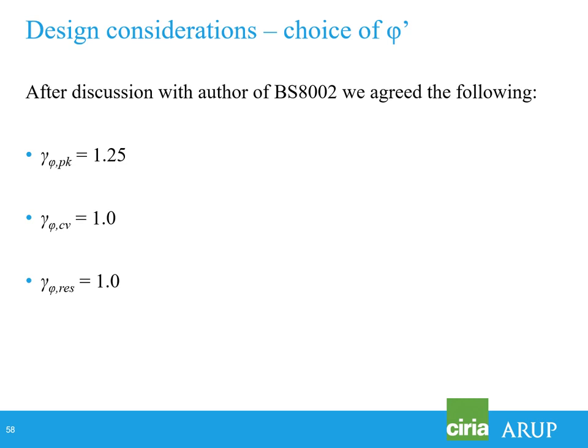The UK National Annex states the 1.25 should be applied to tan-phi or tan-phi CV, although it may be more appropriate to determine the design value of phi CV directly. This was Andrew Bond trying to allow us to set a partial factor of phi CV of unity, but you wouldn't know that from reading the text. After discussion with the authors of the updated BS, we agreed on: 1.25 as per Eurocode 7 for peak values, and unity for CV and residual. Hopefully that will lead to some economies.